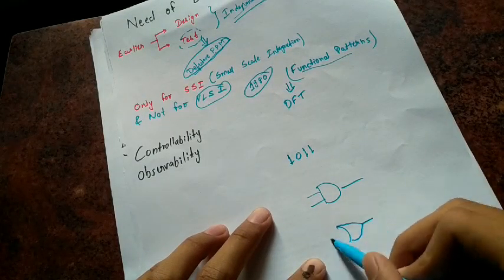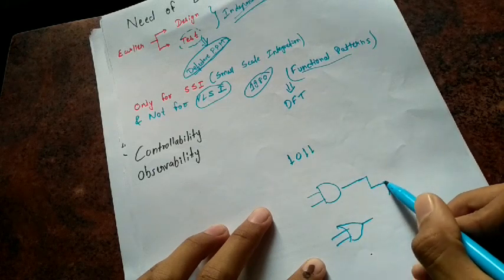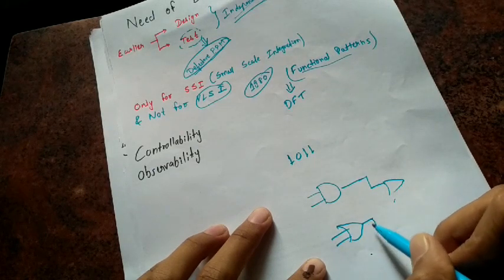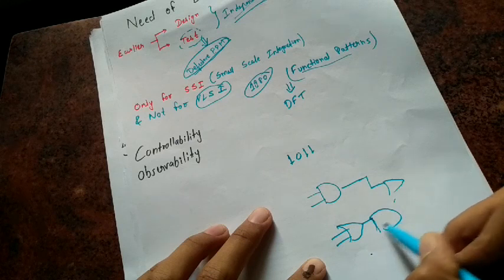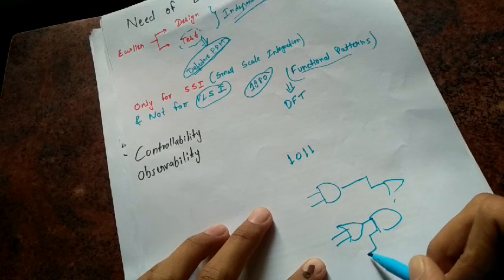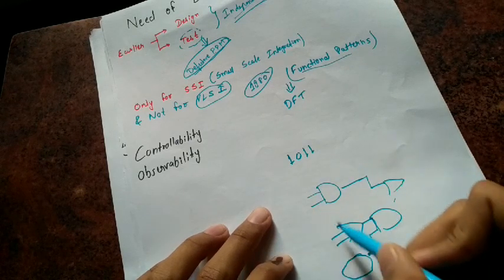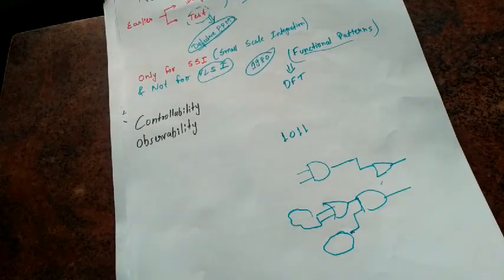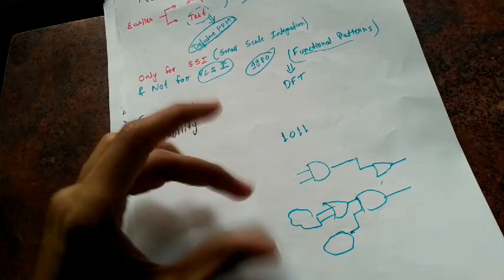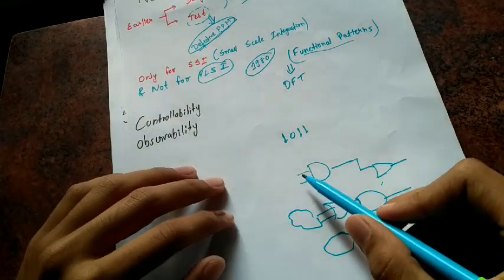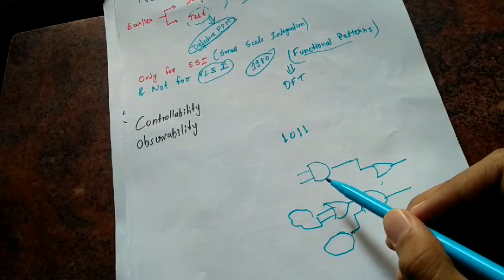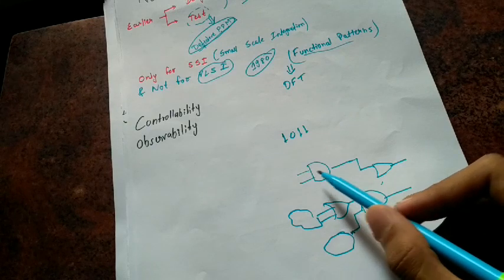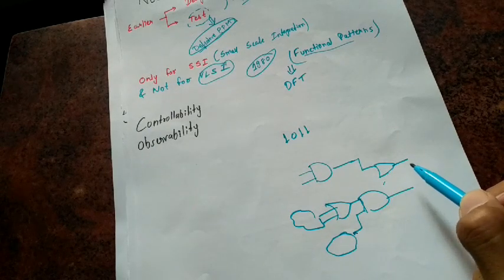This circuit might be feeding to another some gates or some another device. Similarly this is also coming from some another logic, this is also coming from some another logic, and this is going outside like so on. So some functional pattern is being generated and it is being applied to the input. And it is being allowed to navigate through this whole sequential depth.